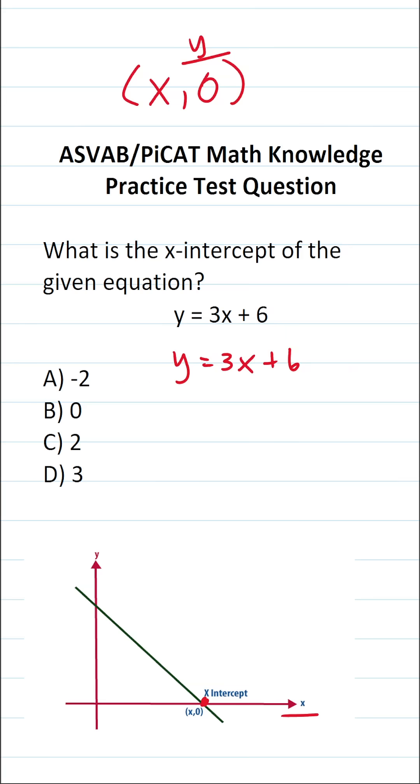To determine the x-intercept of this given equation, all we have to do is set our y value equal to 0. So this becomes 0 equals 3x plus 6. Now that we've done that, all we have to do is solve for x, which is going to be our x-intercept.